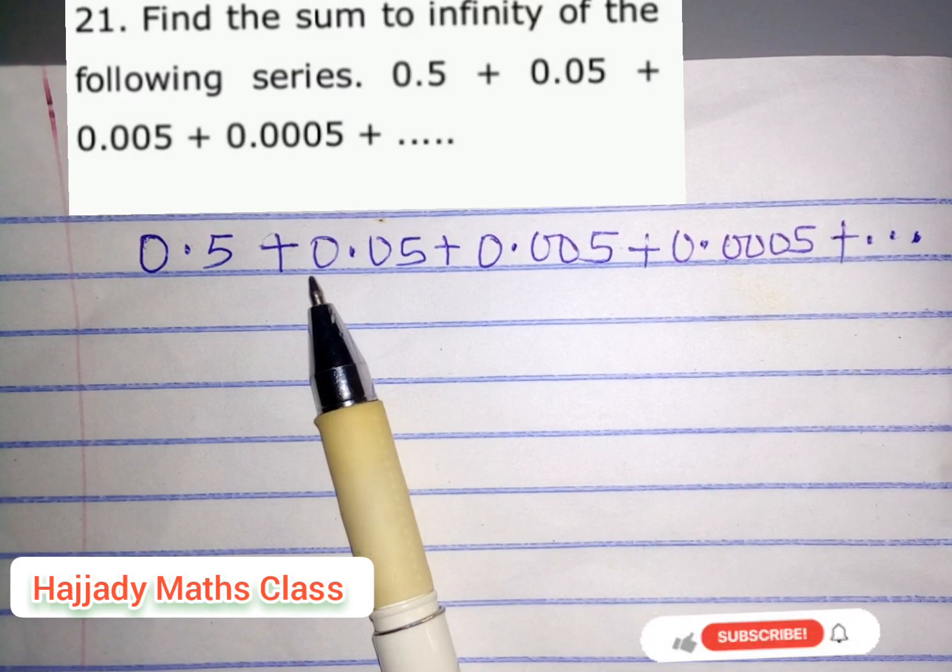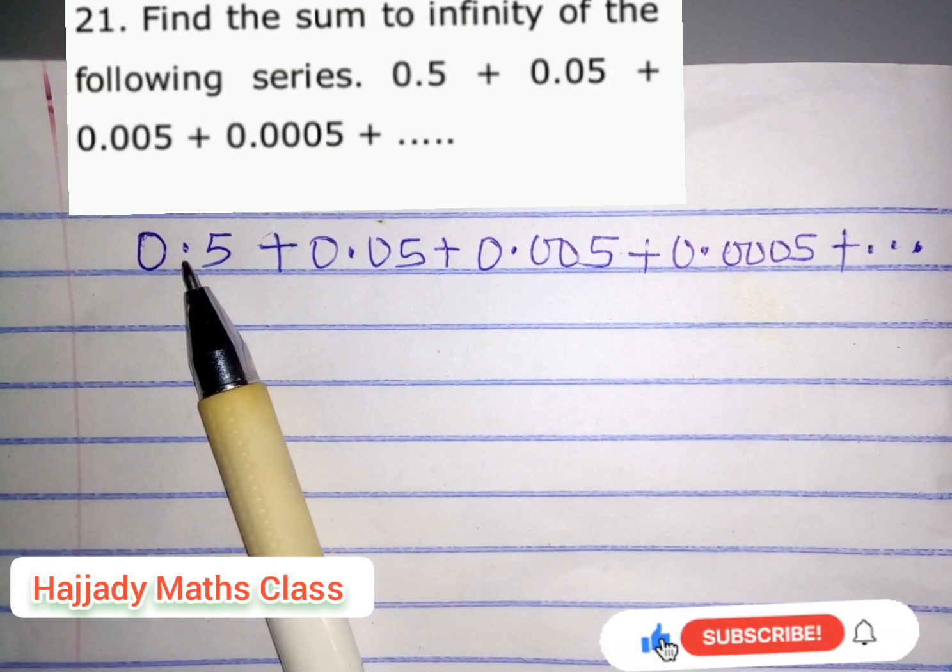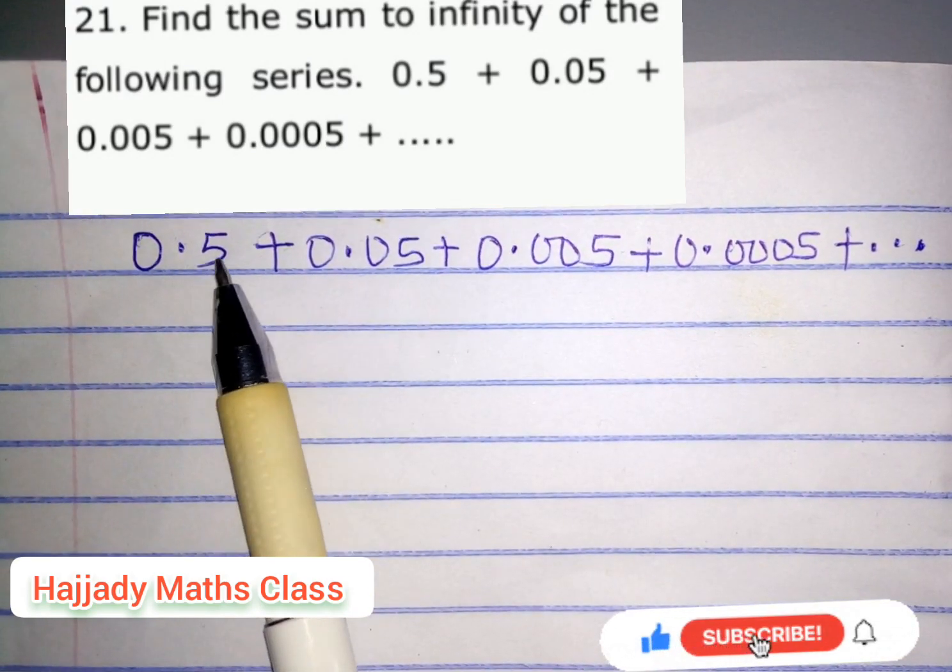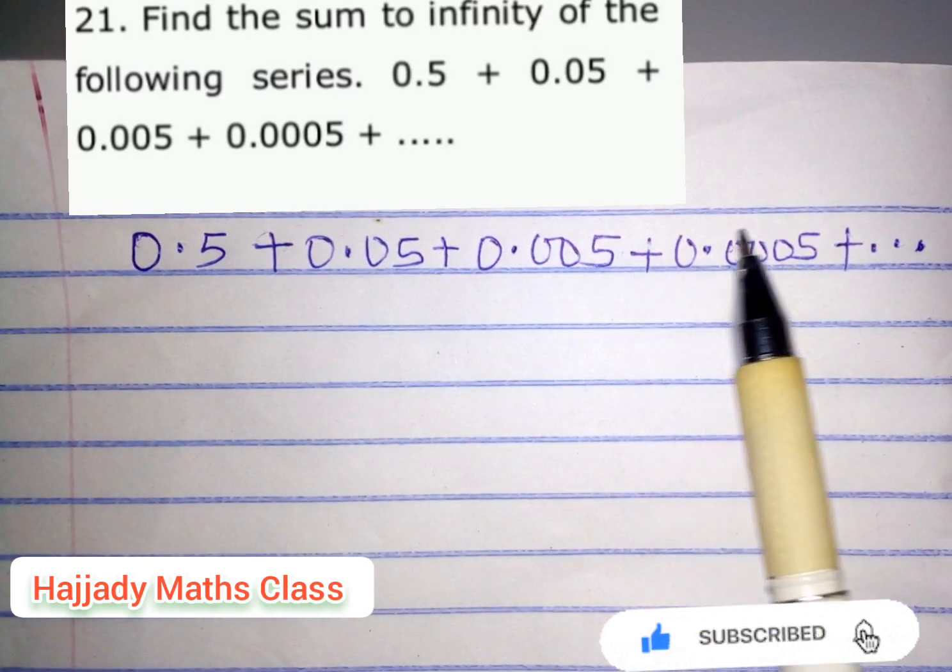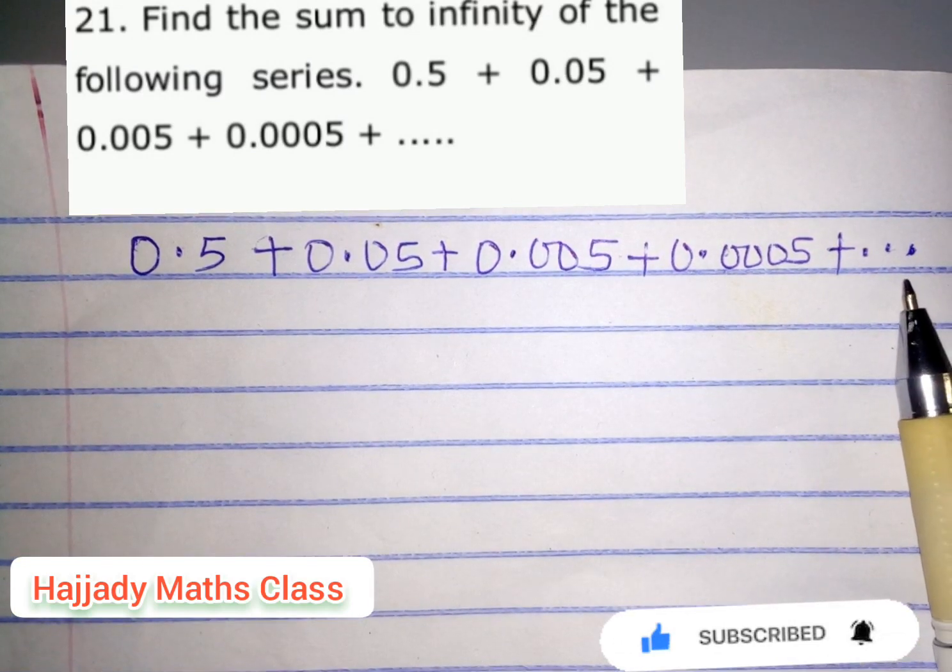Now looking at this question, it says find the sum to infinity of the following series: 0.5 + 0.05 + 0.005 + 0.0005 + ... This shows that the series is continuous.